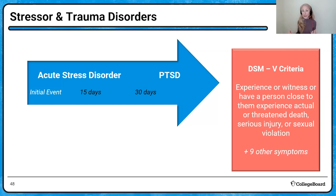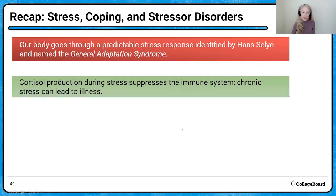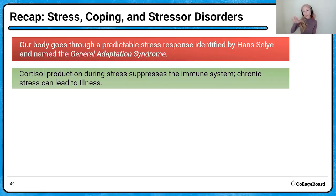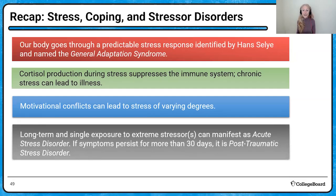While the symptoms of the two disorders are the same, the difference is the time you've had those symptoms. The longer you've had them — more than 30 days — it's post-traumatic stress disorder. To recap: our body goes through a predictable stress response in the general adaptation syndrome. Cortisol production during stressful events suppresses your immune system — that's why chronic stress leads to illness. Motivational conflicts of varying degrees can lead to stress, and long-term or even single exposure to extreme stressors can manifest as acute stress disorder or PTSD.